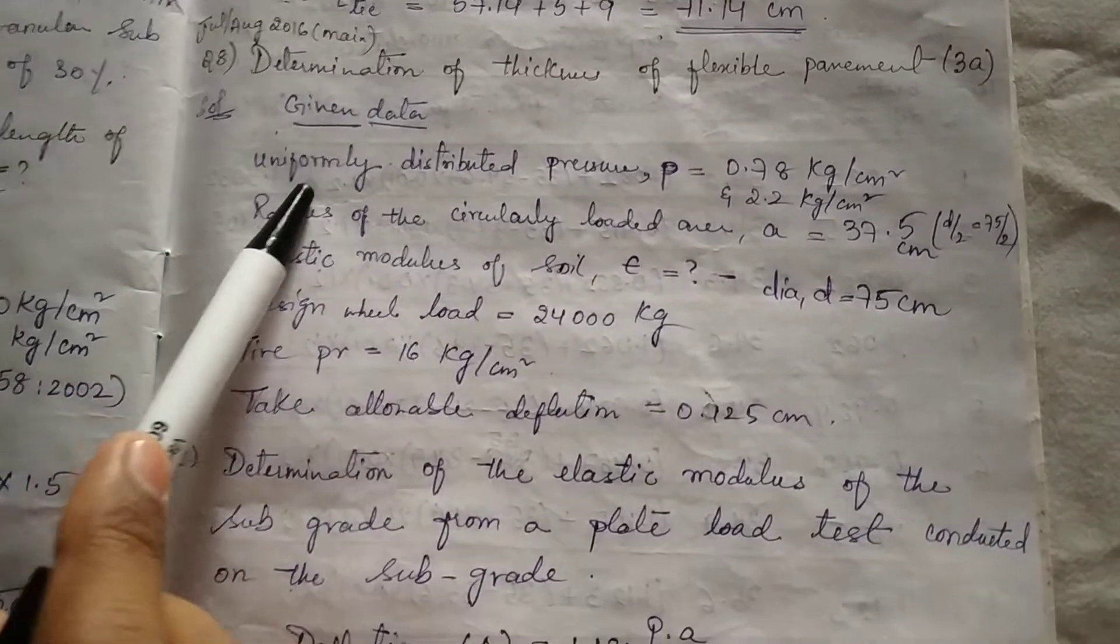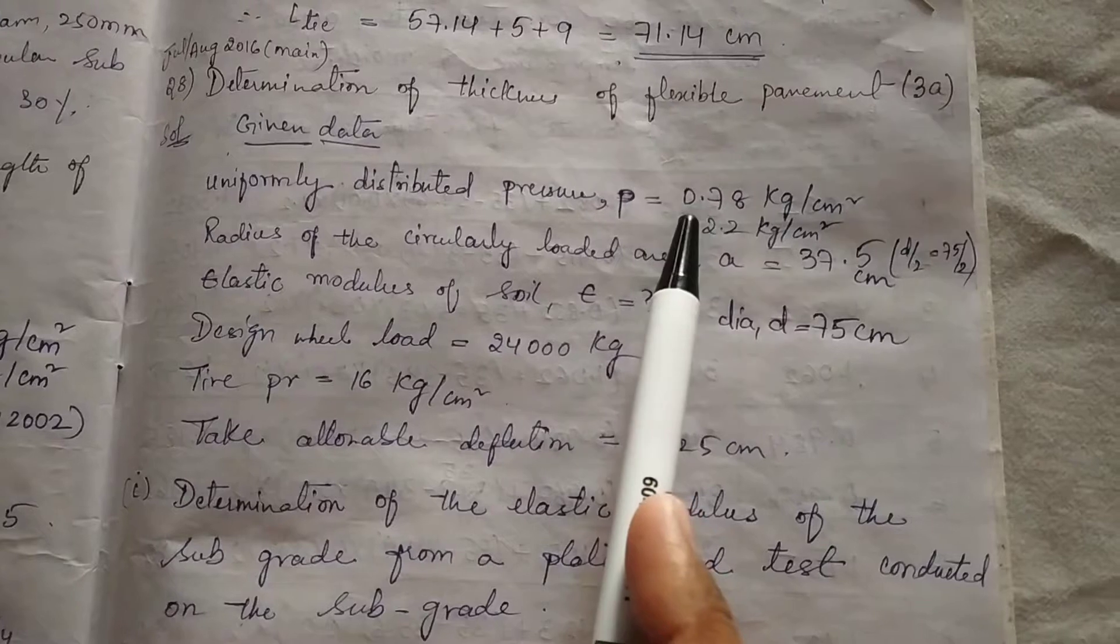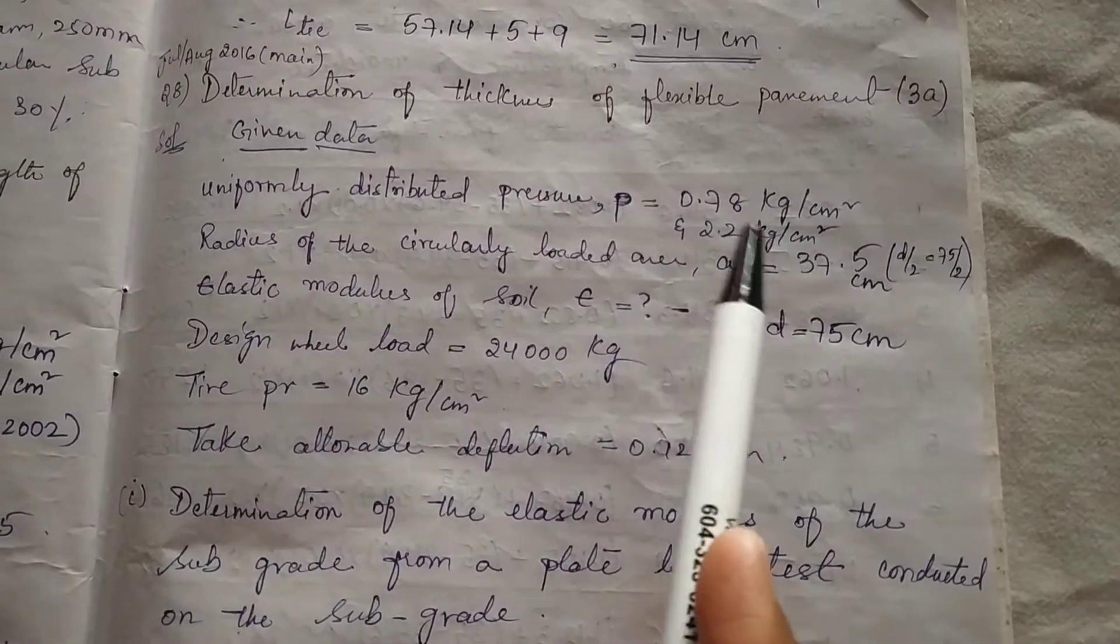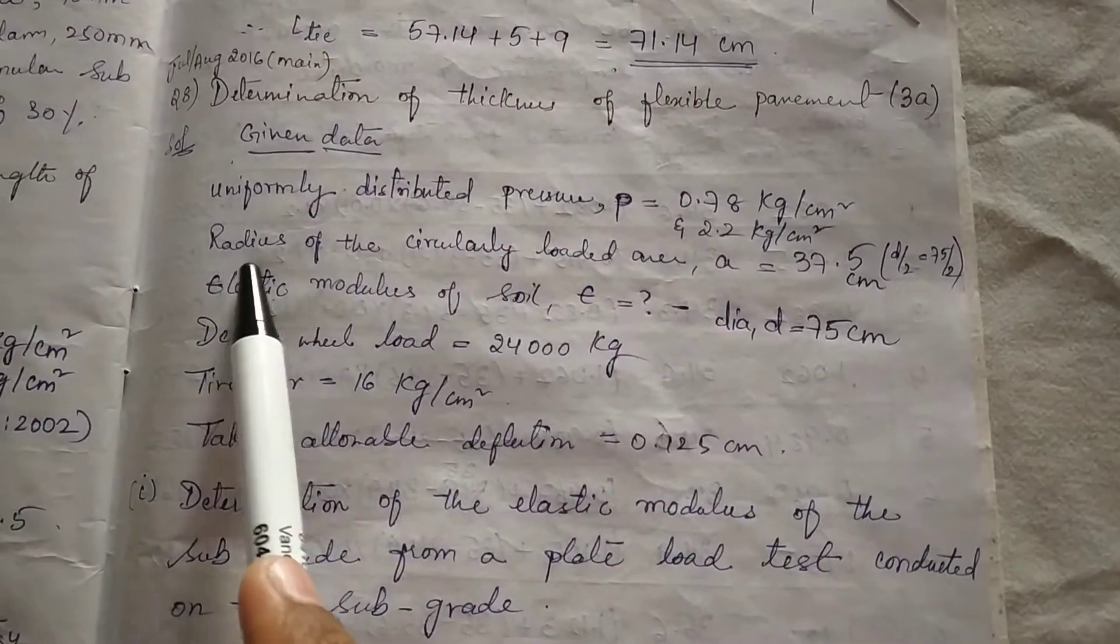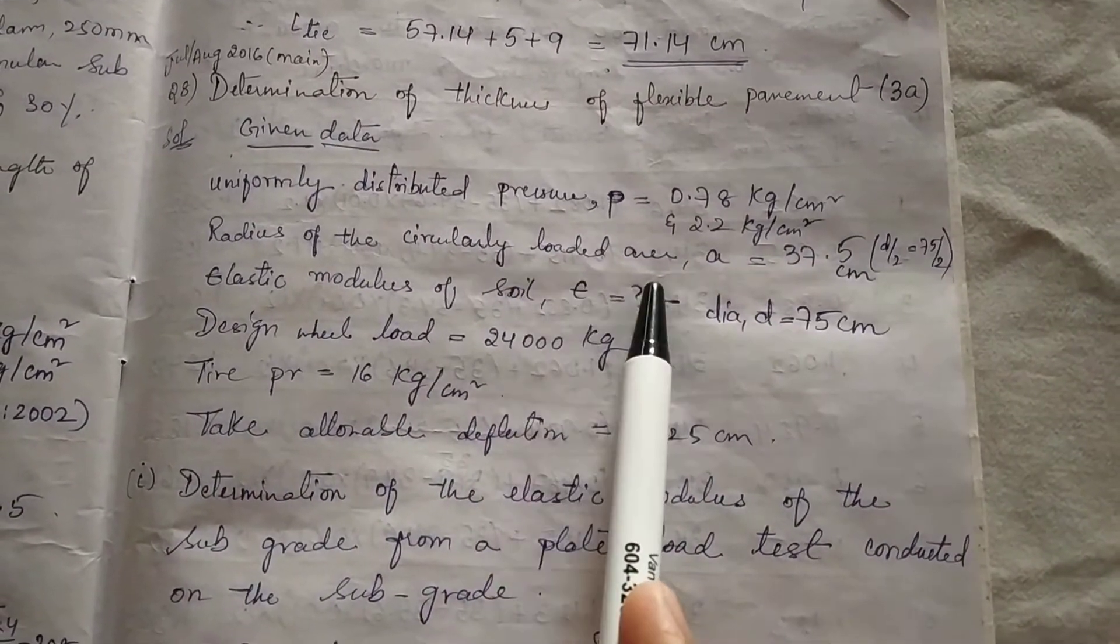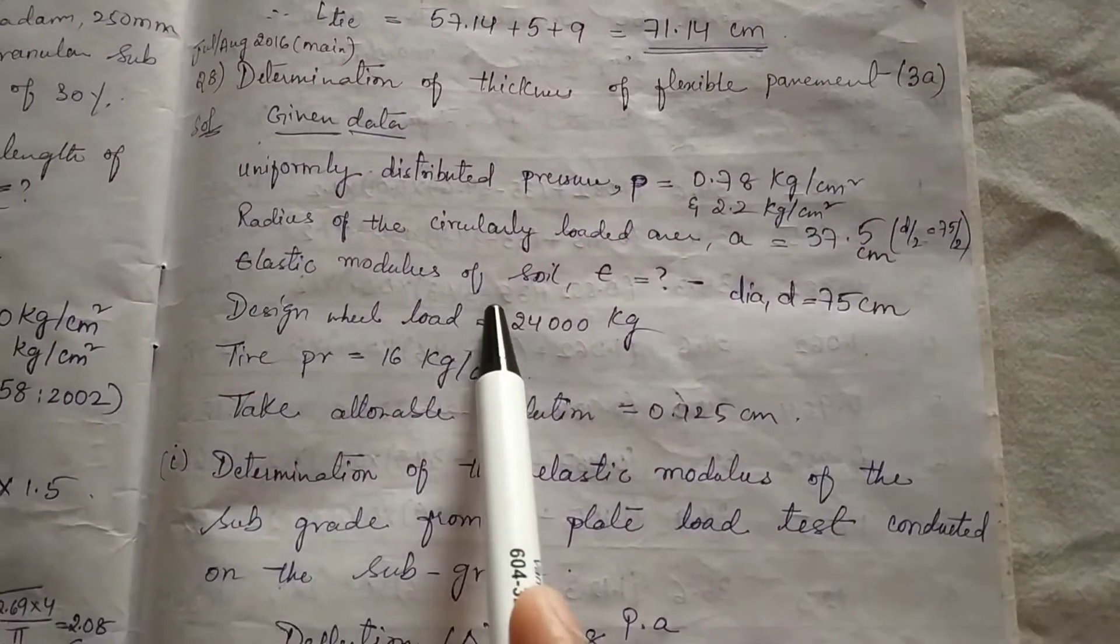It is given that uniformly distributed pressure P is equal to 0.78 kg per centimeter square and 2.2 kg per centimeter square. Radius of the circularly loaded area is equal to 37.5 centimeter. Elastic modulus is not given, we have to find it.